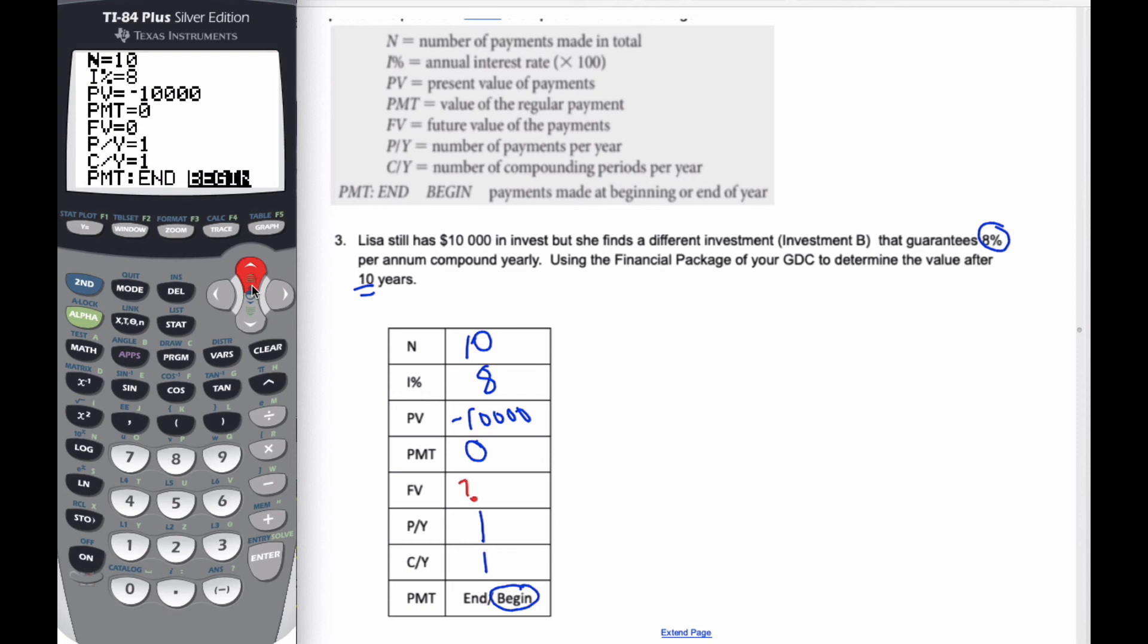And then I go back to my future value, which is what I'm looking for. And this is kind of a new one. You see how it says green solve? I'm going to go alpha, enter, which is the solve button.